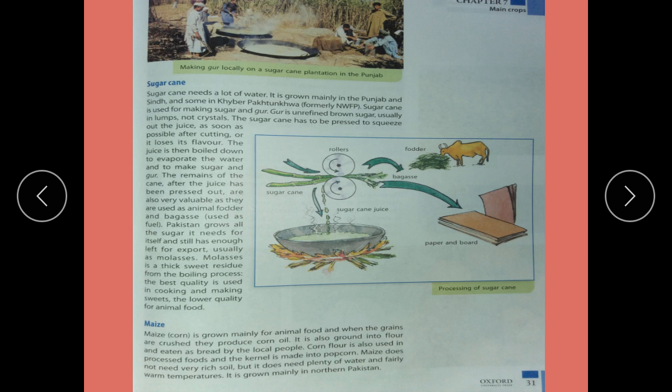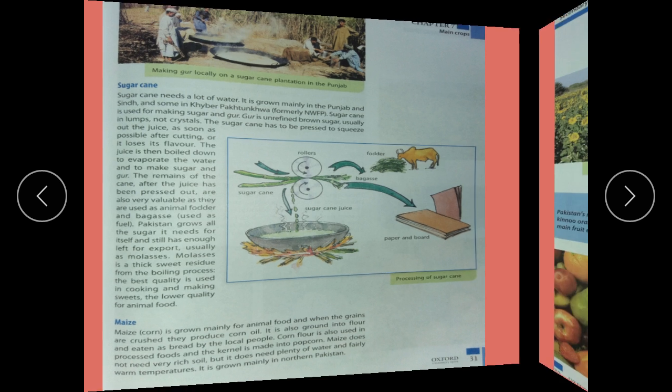Maize is also used in processed foods, and the kernel is made into popcorn or corn flour. Maize does not need buried soil but does need plenty of water and a fairly warm temperature. It is grown mainly in northern Pakistan.